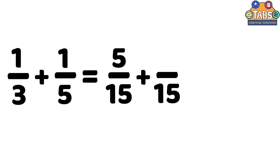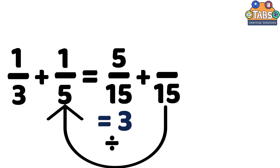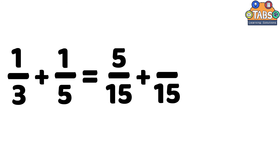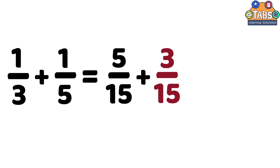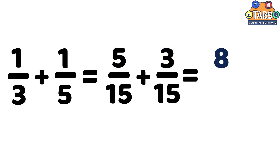The same applies to 1 fifth: we divide 15 by 5, which equals 3. So we multiply both the numerator and denominator by 3: 1 times 3 is 3, and 5 times 3 is 15. The fraction becomes 3 over 15. The equation is now 5 over 15 plus 3 over 15. We add the numerators: 5 plus 3 is 8, and copy the denominator. The answer is 8 over 15. Since 8 over 15 is already in its simplest form, the final answer is 8 over 15.